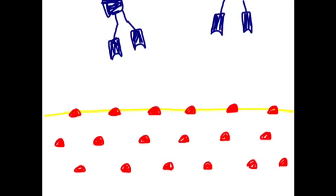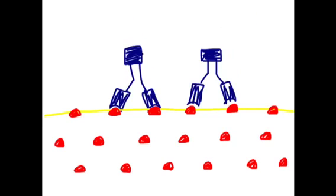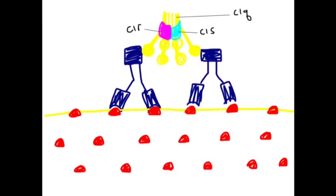Activation of the complement system occurs on pathogen surfaces. The C1 complex binds to the antibody and the binding results in the activation of the C1r and the C1s proteases. Active C1s cleaves C4 into C4a and C4b.